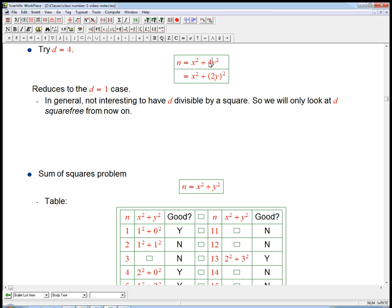Well, 4 is a square itself, and so you could just write this as x squared plus 2y squared. So it's really basically the d equals 1 case. It's really can I write n as the sum of two squares, and this one happens to be even, but mainly it's just writing something as the sum of two squares. So d equals 4 is not a particularly interesting case. In fact, in general, it's not even interesting to have d divisible by a square. So if this was like d equals 12, you could take that 12 and take the 4 and put it as a 2 squared.